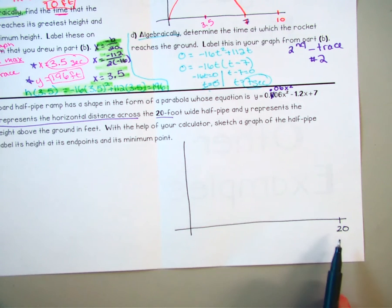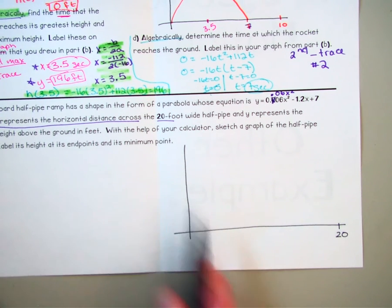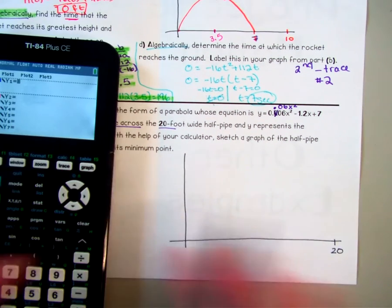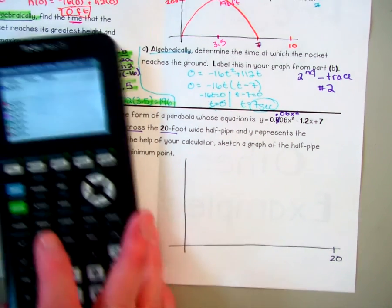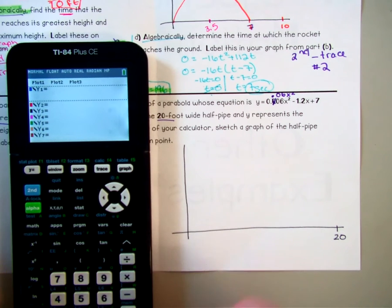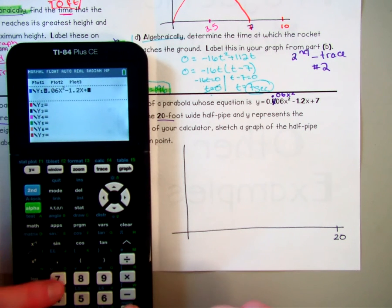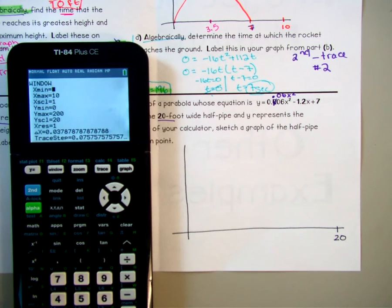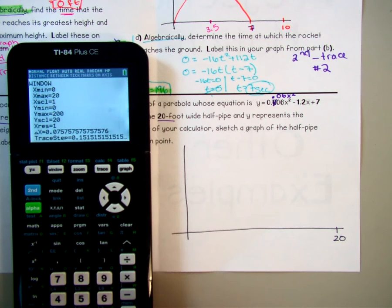So I put 20 on here because they told me right here, x is my horizontal distance. This is my horizontal and it's 20 feet wide. So I know at most it's going to be 20. So I'm going to type into my calculator, my 0.06x squared minus 1.2x plus 7. And then I'm going to go to my window. My x axis has to go from 0 to 20. And I'll change my x scale to go by 2s just because I can.